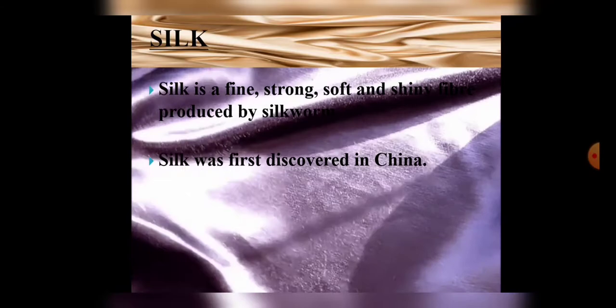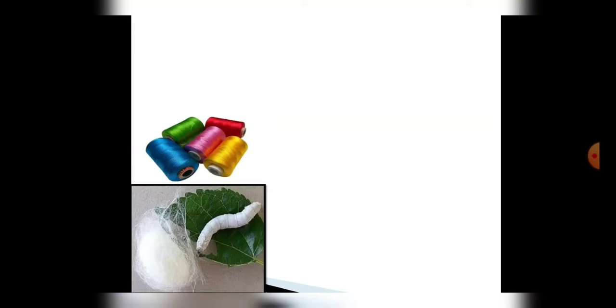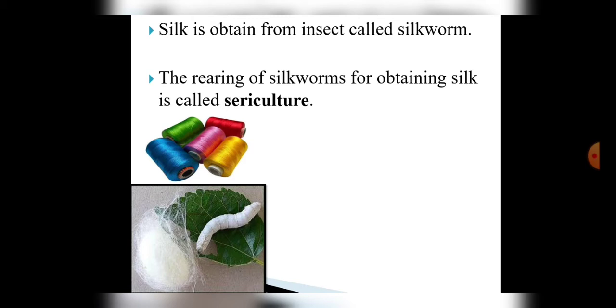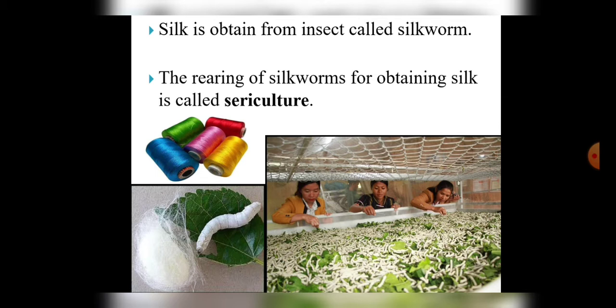Silk is the strongest natural fiber. The silkworm is an insect which is reared for silk, and this rearing process is known as sericulture. Here in the given picture you can see how silkworms are reared on mulberry leaves, because these insects feed on mulberry leaves.